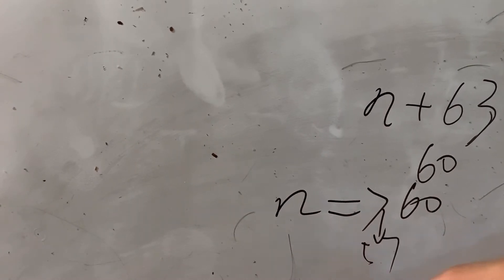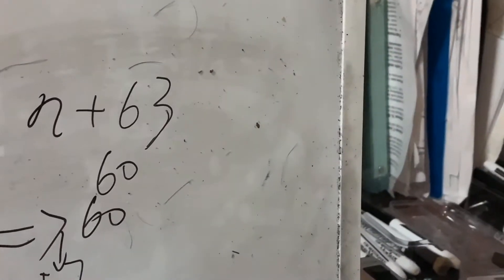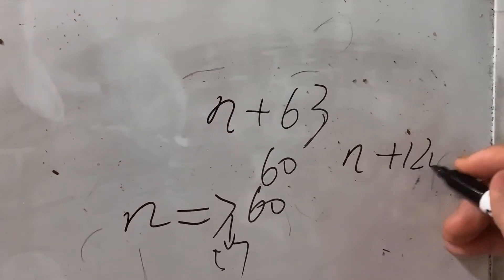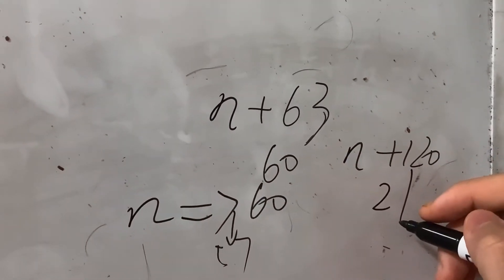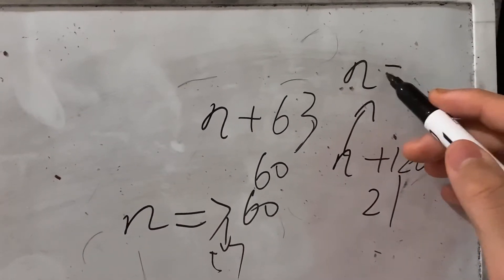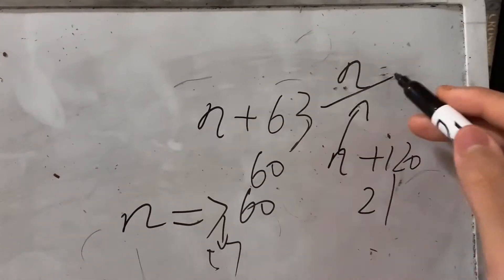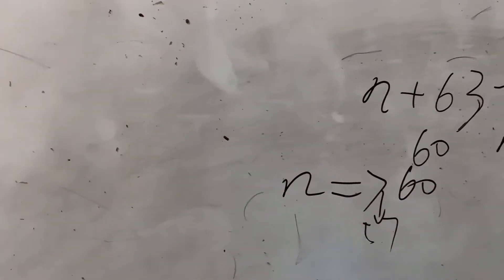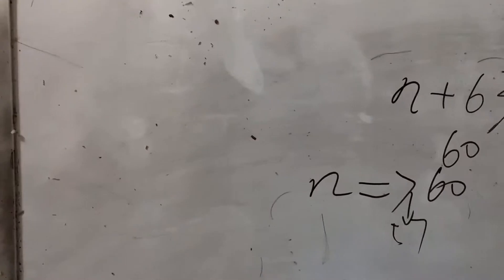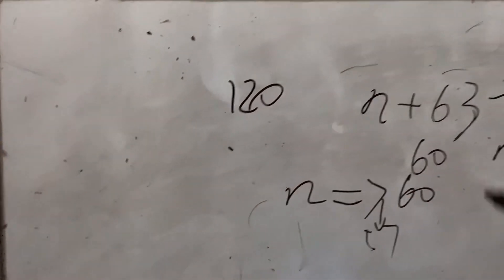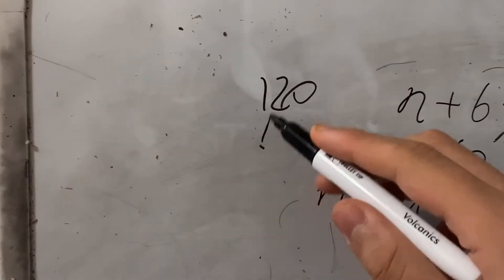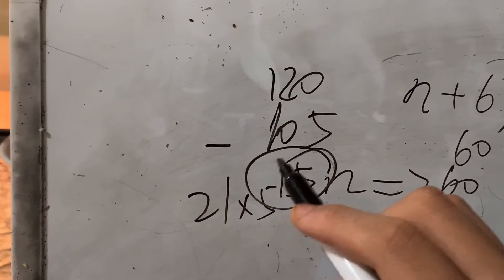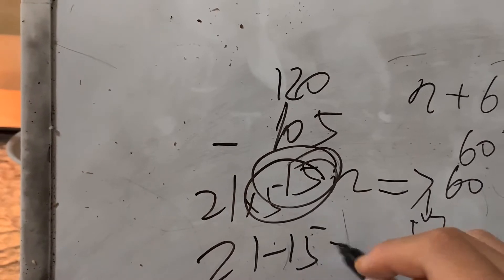And using the same way, another case is n plus 120 is divisible by 21. So n must be divisible by, I mean, when it divides 21, it must have a remainder of 6. How can we get that? Well, we know that 120 has 105. I mean, it has 15 minus 21 times 5 is 105. So it has a left 15 and 21 minus 15 is the 6.